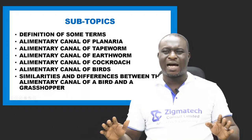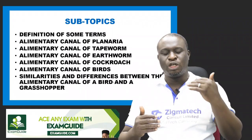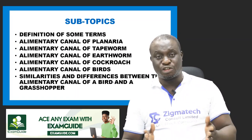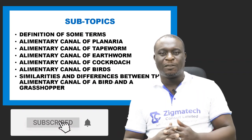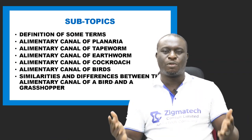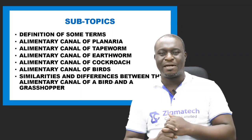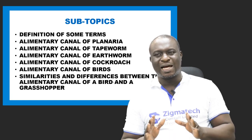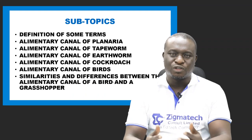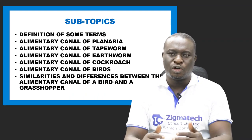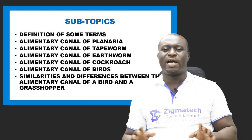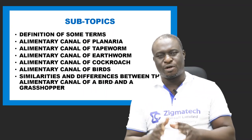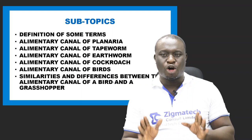First, we're going to look at some subtopics. We have the definition of terms used in digestion. We'll also be looking at the alimentary canal of various organisms: the planaria, the tapeworm, the earthworm, the cockroach, and birds. We'll also discuss the similarities and differences between the alimentary canal of a bird and that of a grasshopper or cockroach.